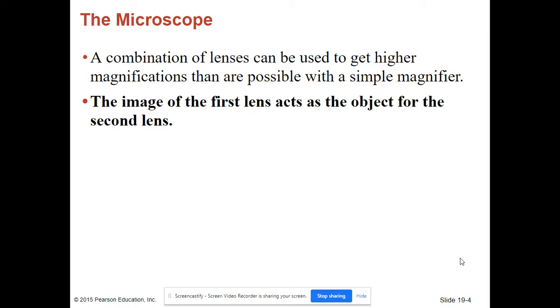Light passes through that first lens, and wherever that image is located, that's going to be where your object is for the second lens when you go to do your calculation.